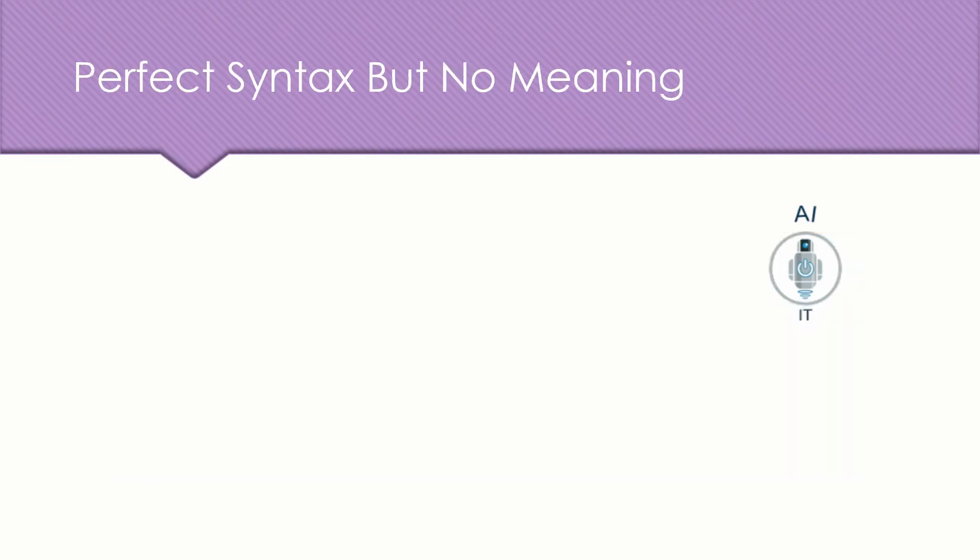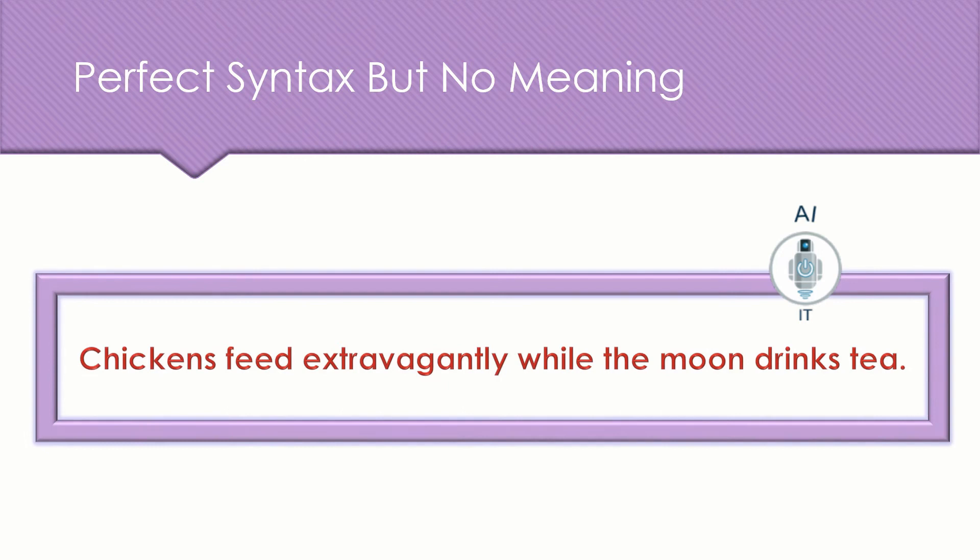Now, the third difficulty that we may come across is perfect syntax but there is no meaning. If you read this sentence, chickens feed extravagantly while the moon drinks tea. Even though the sentence looks grammatically correct, it does not make any sense. So in human language, a perfect balance of syntax and semantics is important for better understanding.